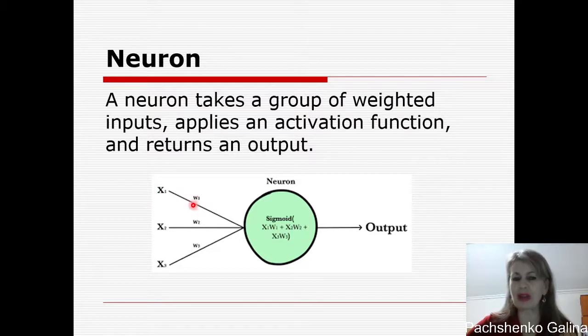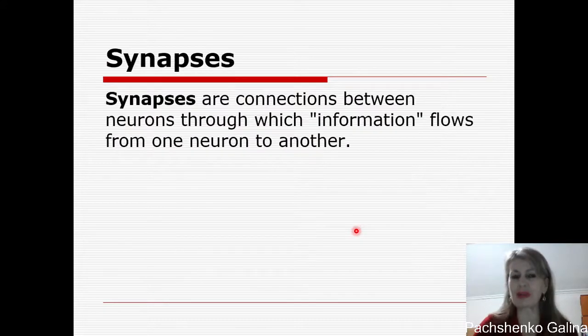For example here w1, w2, w3. We find a sum like x1 multiplied by w1 plus x2 multiplied by w2 plus x3 multiplied by w3. And we apply to this value the sigmoid function. And here we will calculate our output of the neuron.